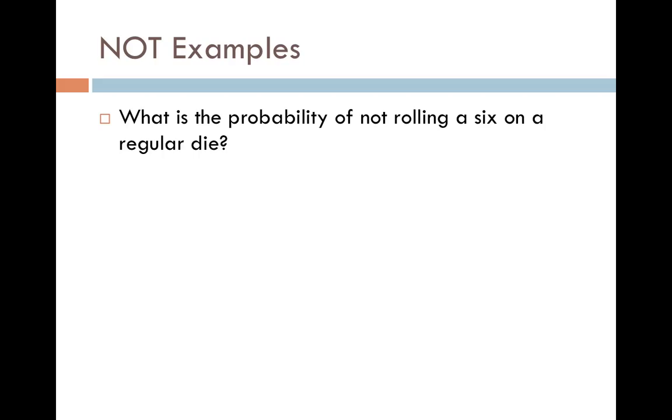So let's look at an example. What is the probability of NOT rolling a 6 on a regular die? Remember, die is just the singular for dice. So I did 1 minus the probability of rolling 6. The probability of rolling 6 is 1/6. So 1 minus 1/6 is 5/6.